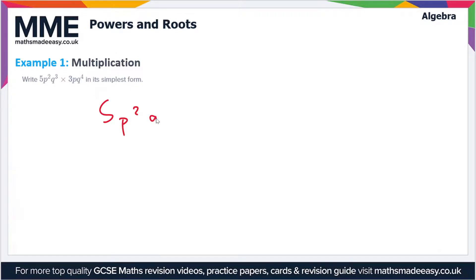Let's break this up into its individual terms. We're going to have 5 times 3, and then we're going to multiply the p's together, so we've got p² times p. And we've got q³ times q⁴. Anytime you have an expression written like this, it essentially means 5 times p² times q³, but we don't bother putting the multiplication symbols in.